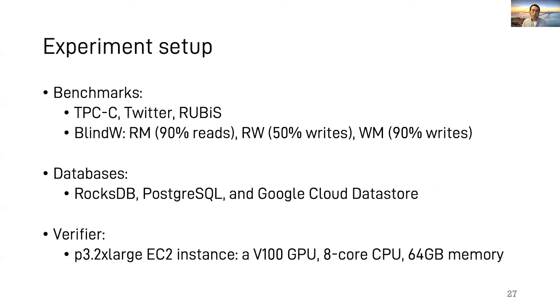We experimented with six benchmarks: TPCC, Twitter, Rubis, and our own microbenchmark BlindWrites, which has different variants for different ratios of reads and writes. We experimented with Cobra on three databases: RocksDB, PostgreSQL, and Google Cloud Datastore. Our verifier runs on an EC2 machine with an NVIDIA GPU.